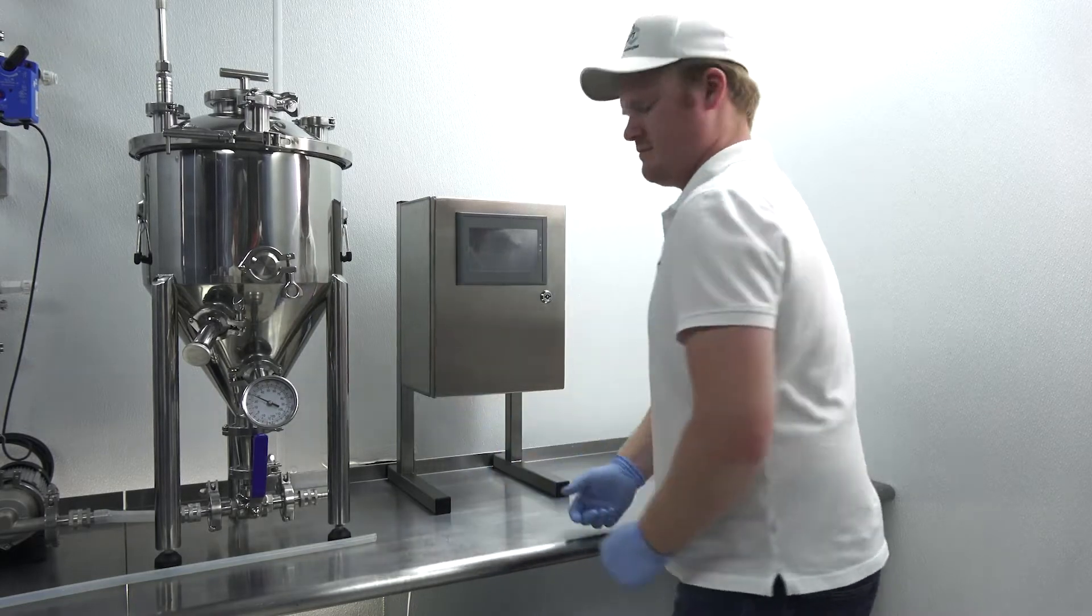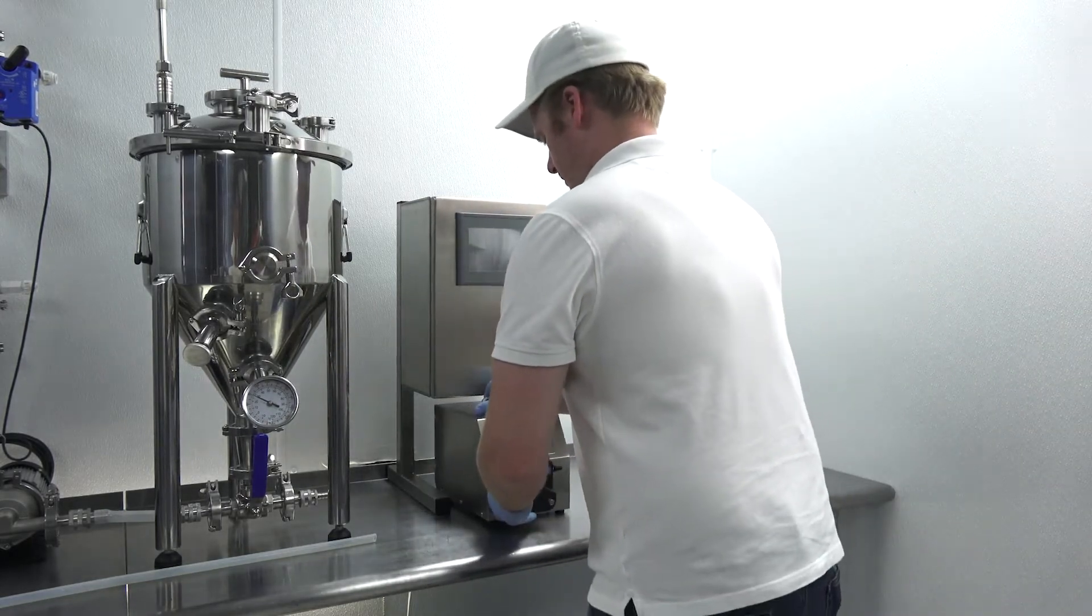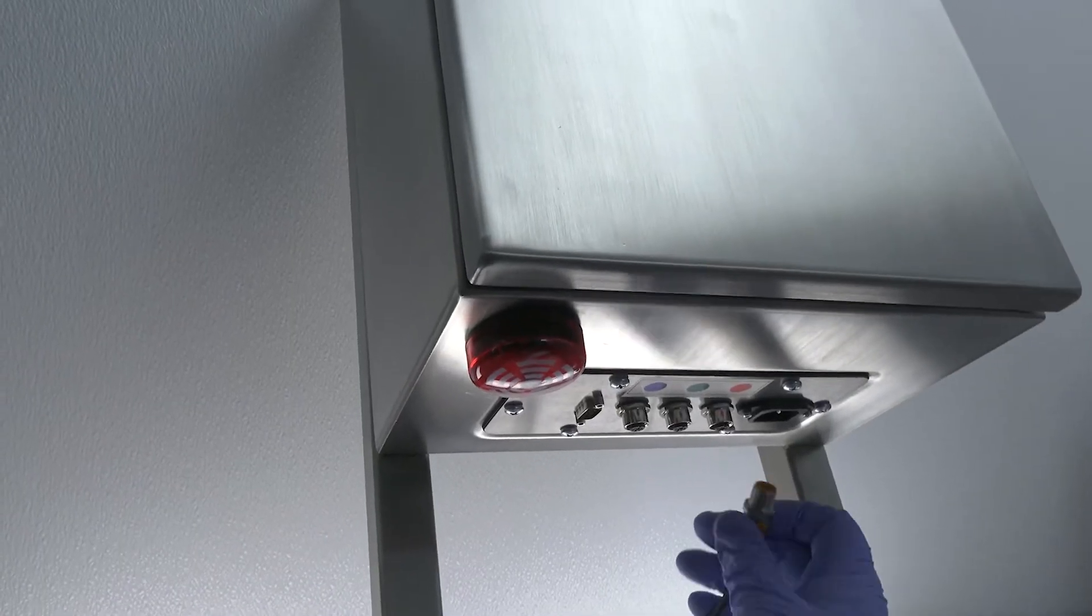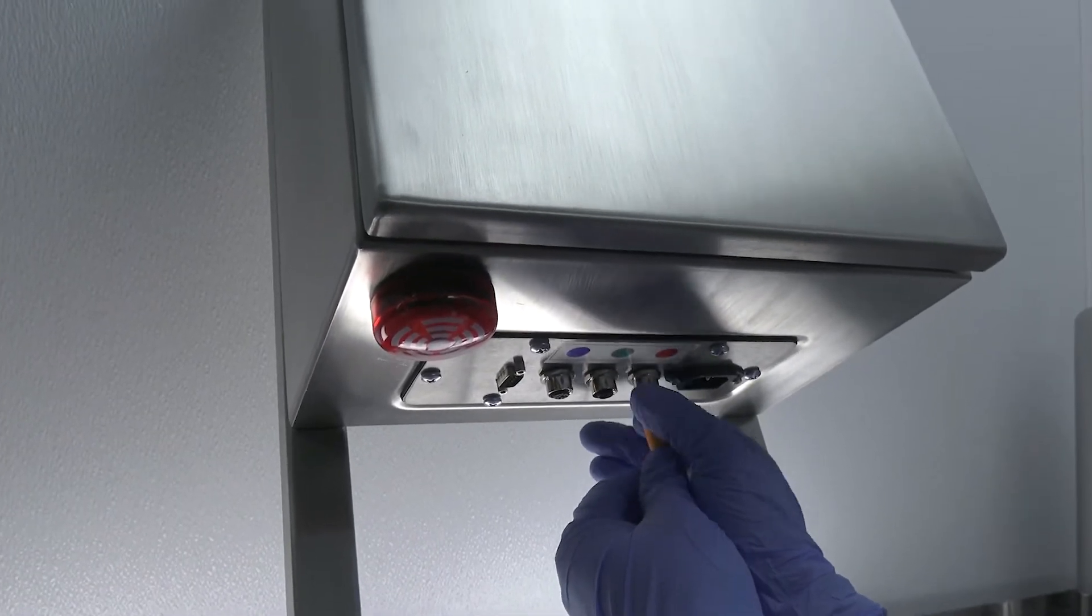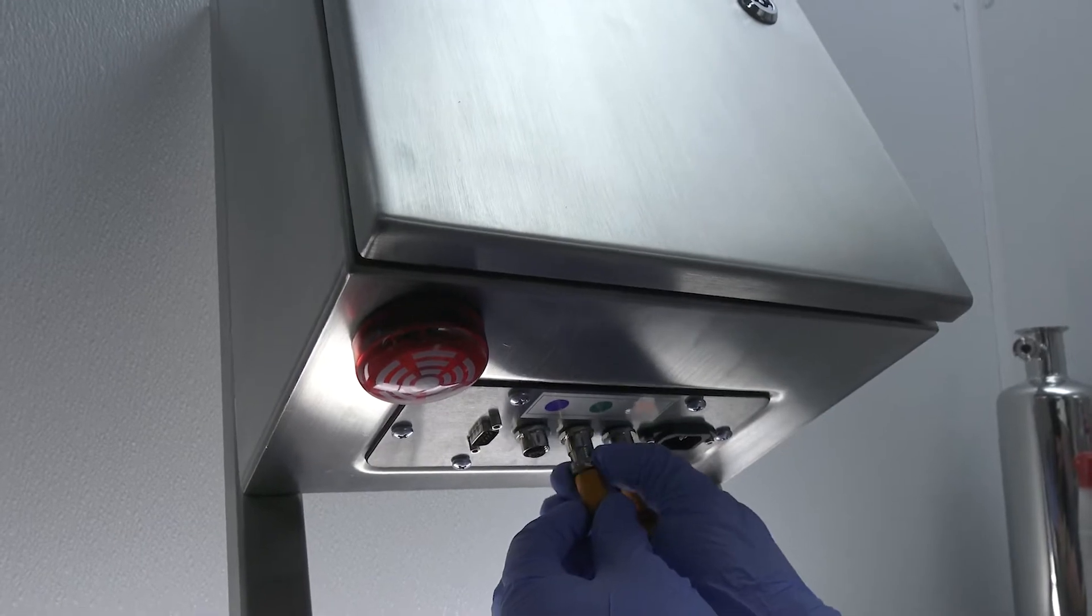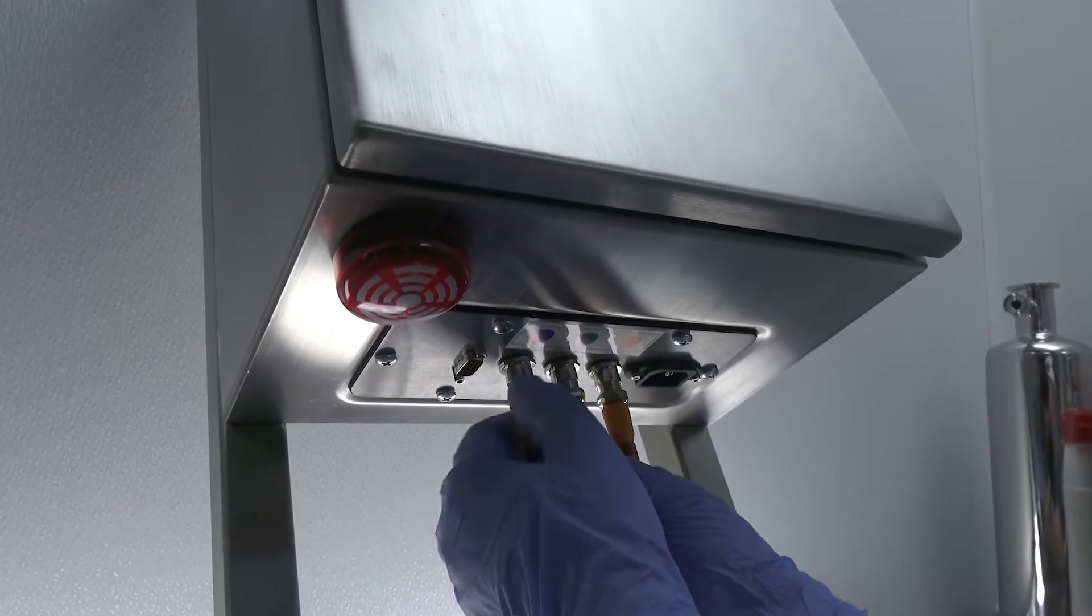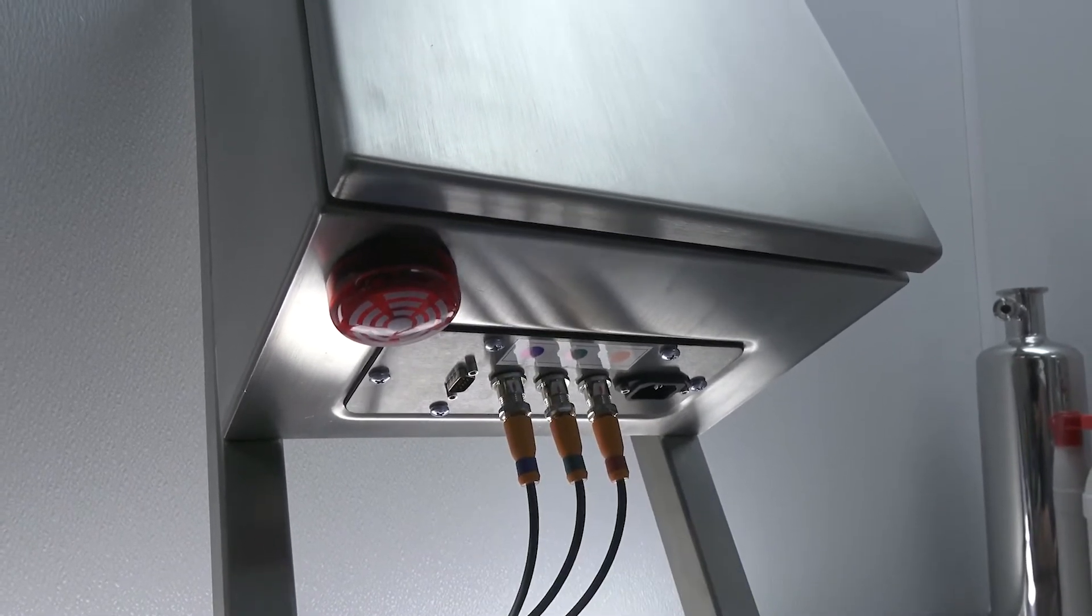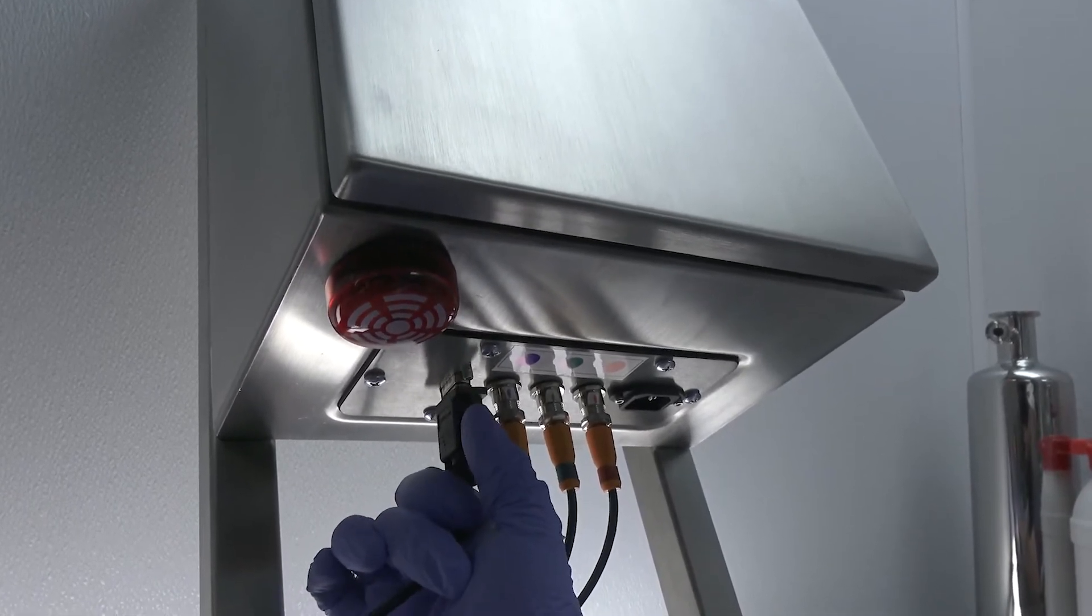Now we place our automation controller and peristaltic pump. We connect the sensor and power cables to the automation controller. First we connect the flow sensor, then the pressure sensor, then the cooling control valve. Finally, we attach the serial cable which interfaces with the power supply.